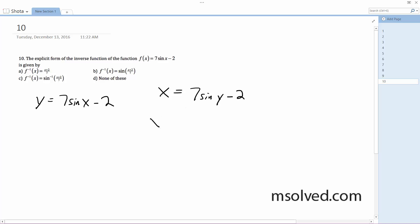Alright, so x plus 2 is equal to 7 sine of y. I'm going to flip these around here. So sine of y, and I'm going to divide: x plus 2 divided by 7.